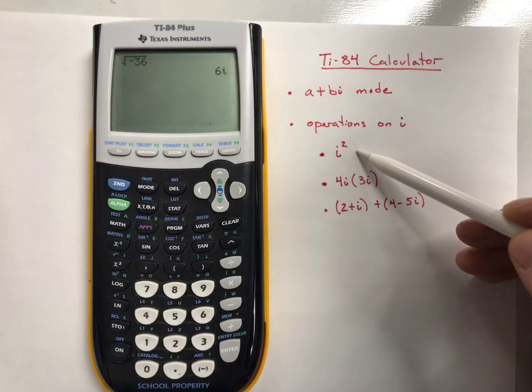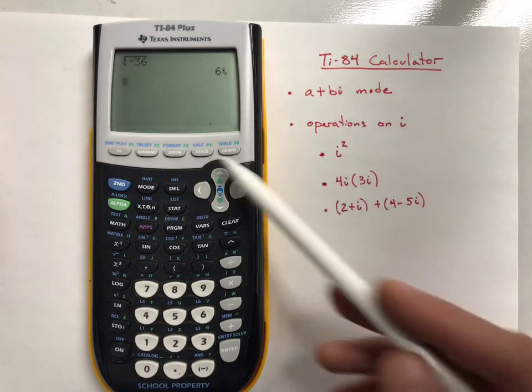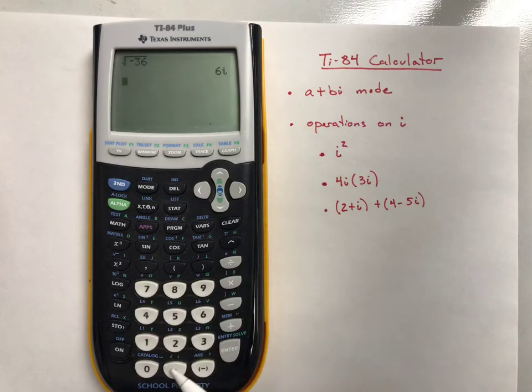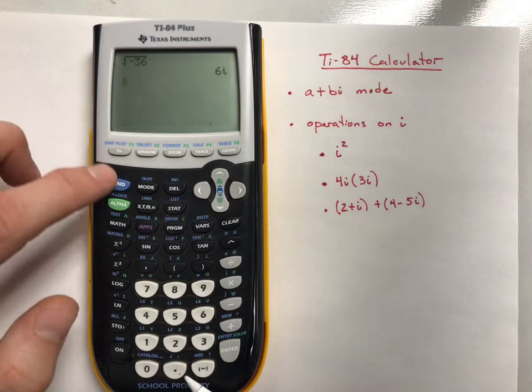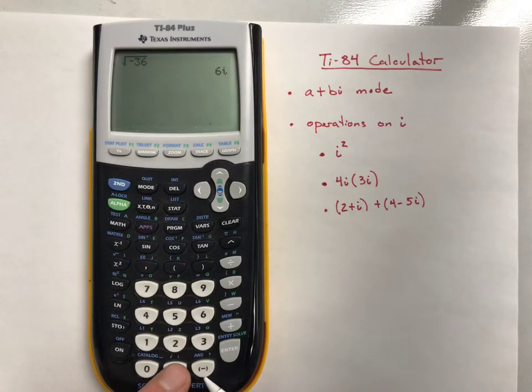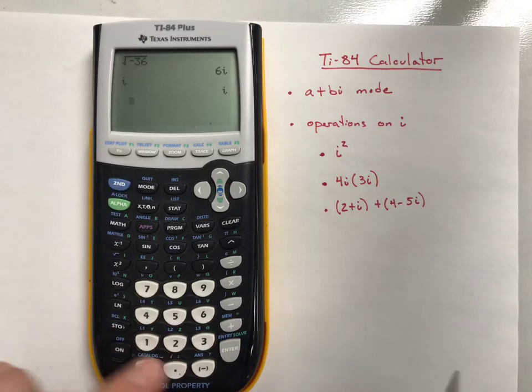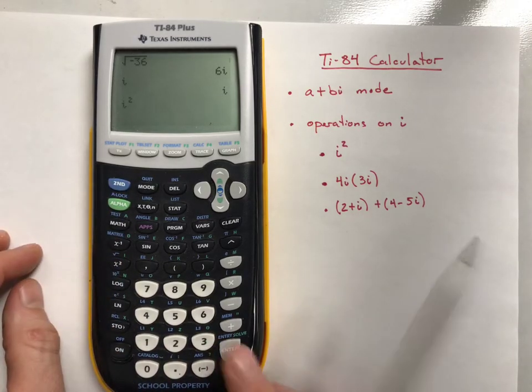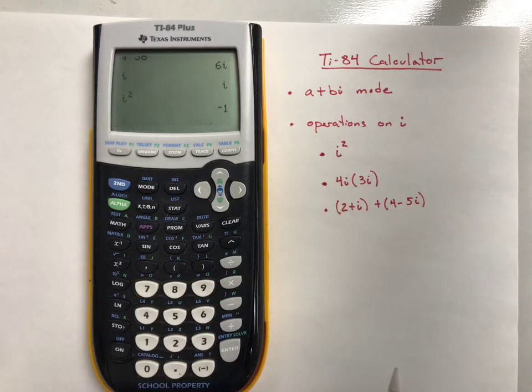Other operations you can do on I with your graphing calculator: I is an option down here with your period, at the very bottom right. You have to hit the second button and then the period, and that gives you your I value. If you want to do I squared, just type that in, and it does equal negative 1 as we expect.